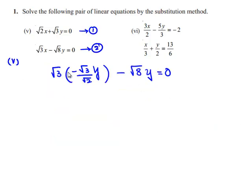So root 3 multiplied by minus root 3 gives minus 3 y by root 2, and this is minus root 8 y, which is equal to 0.